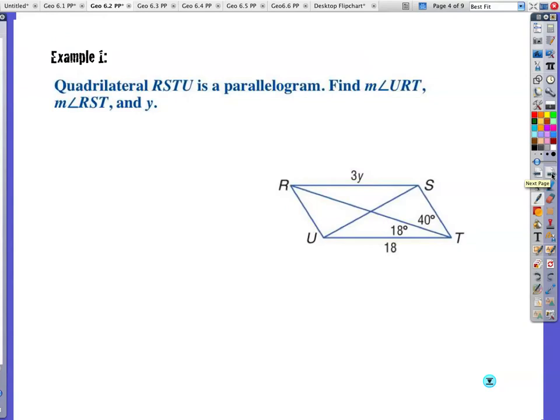Alright, example one. Quadrilateral RSTU is a parallelogram. Find the measure of angle URT. Let's see, URT is right here. And then I need to find the measure of RST. Angle R, S, and then T. So this one right here. Okay? I'm not saying that those two are congruent to each other.